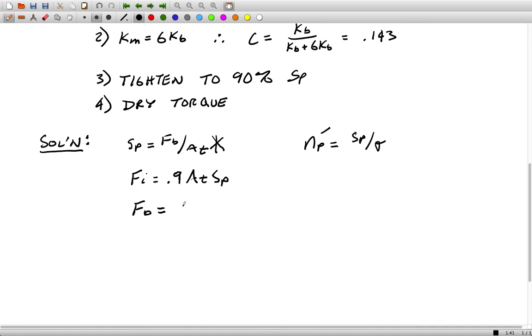The force in a bolt when you have joint stiffness in mind is c times P plus Fi. So from all of the above, I can use those three equations to write out one statement from which I can solve for At. So we'll have Sp times At is equal to Fb, which is also equal to CP plus Fi, and Fi is equal to 0.9 times At times Sp.